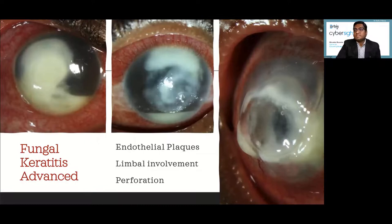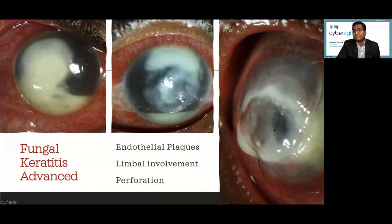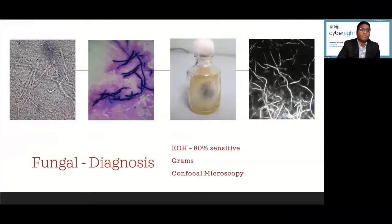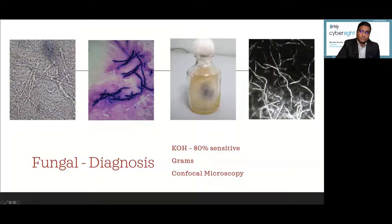In the advanced stage of fungal keratitis, you can see deep endothelial plaques, abscess formation, limbal involvement, and frank corneal perforation with iris prolapse. These advanced cases will require therapeutic grafts. For microbiological diagnosis, a simple KOH mount beautifully shows fungal filaments, gram stain makes them stand out, and potato dextrose agar shows fungal growth. In vivo confocal microscopy also demonstrates fungal filaments. If you don't have access to these, rely on the clinical signs and start treatment.